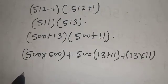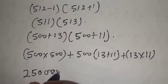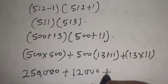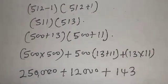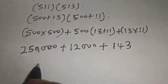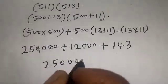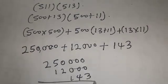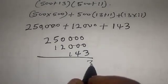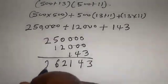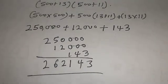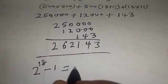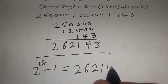500 times 500 is 250,000. Opening the bracket we have 250,000 plus 12,000 plus 140, plus 143. Adding everything together gives us 262,143. So our final answer is: 2 raised to power 18 minus 1, without using a calculator, is equal to 262,143.